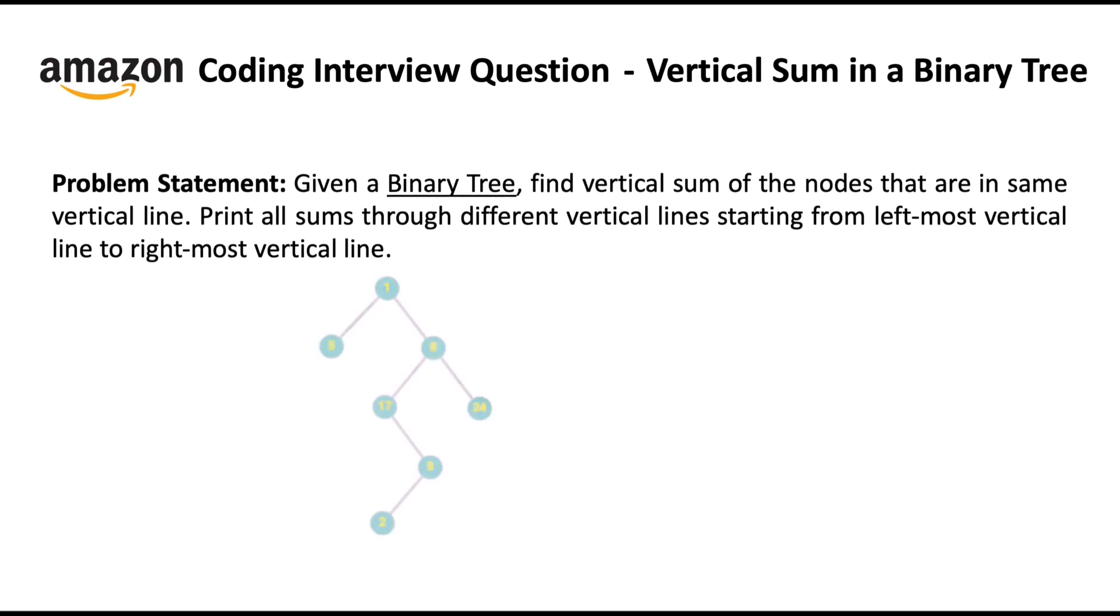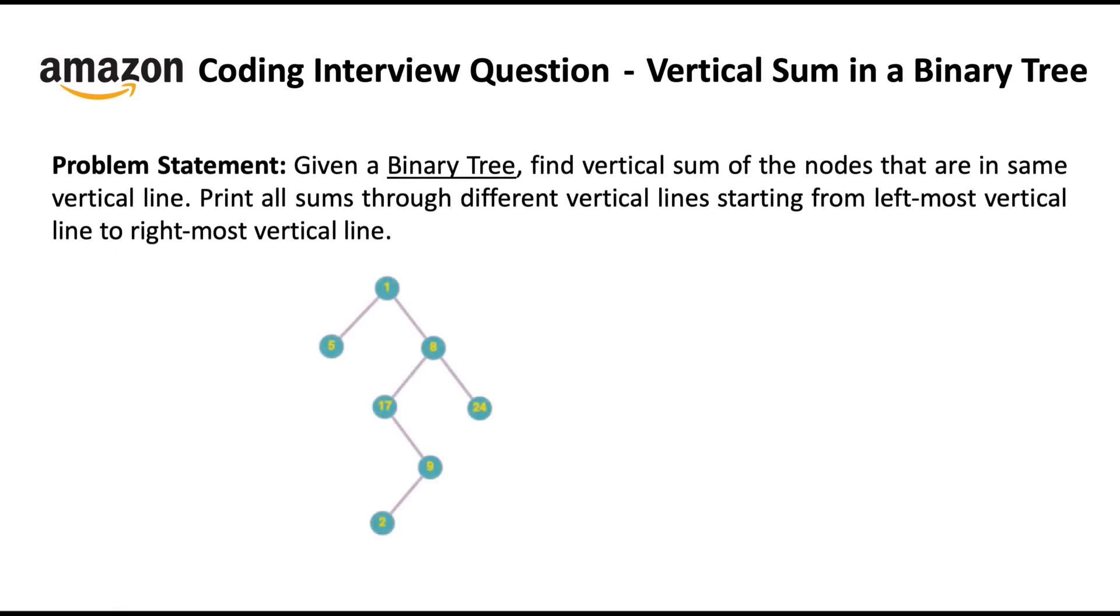Let's see this example. In this example, node 5 has no children. Node 17 has one child which is 9 and node 1 has two children which are 5 and 8. If you want to know more about a binary tree in detail, you can check out an amazing video lesson by my code school. I have kept a link in the description.